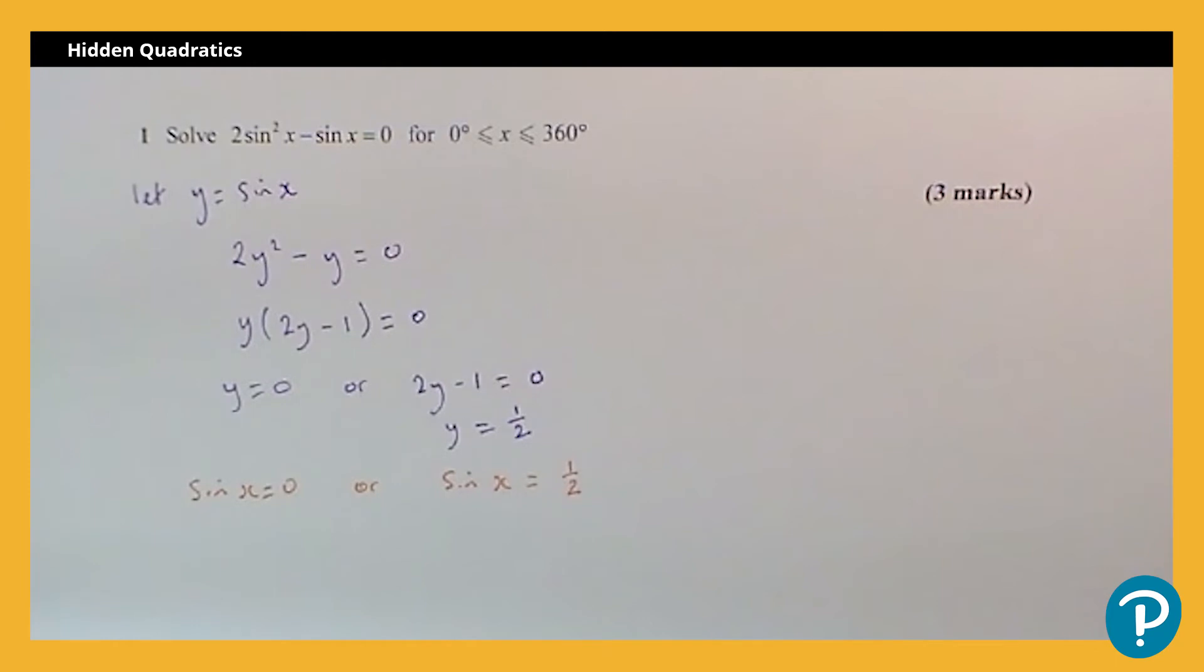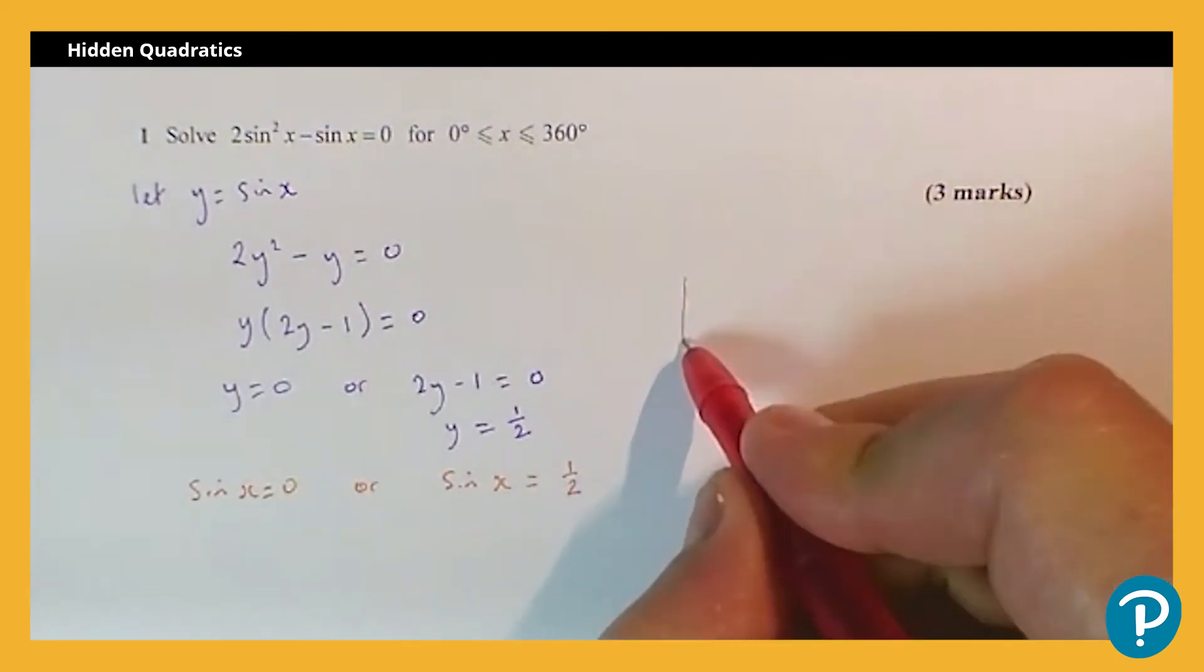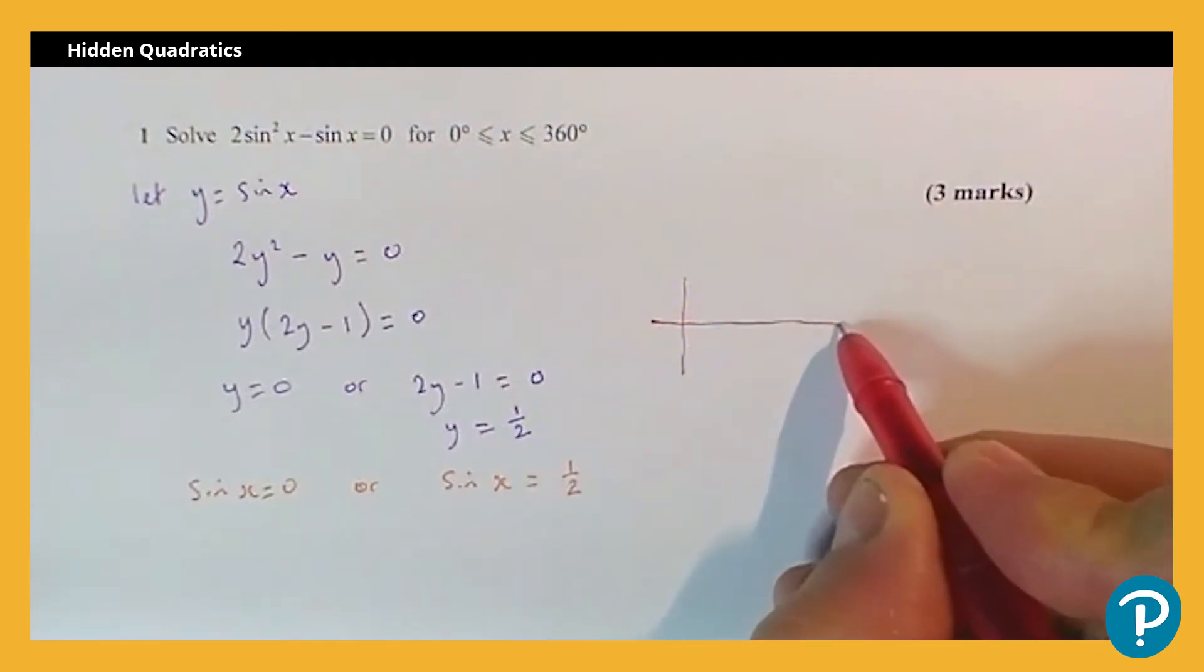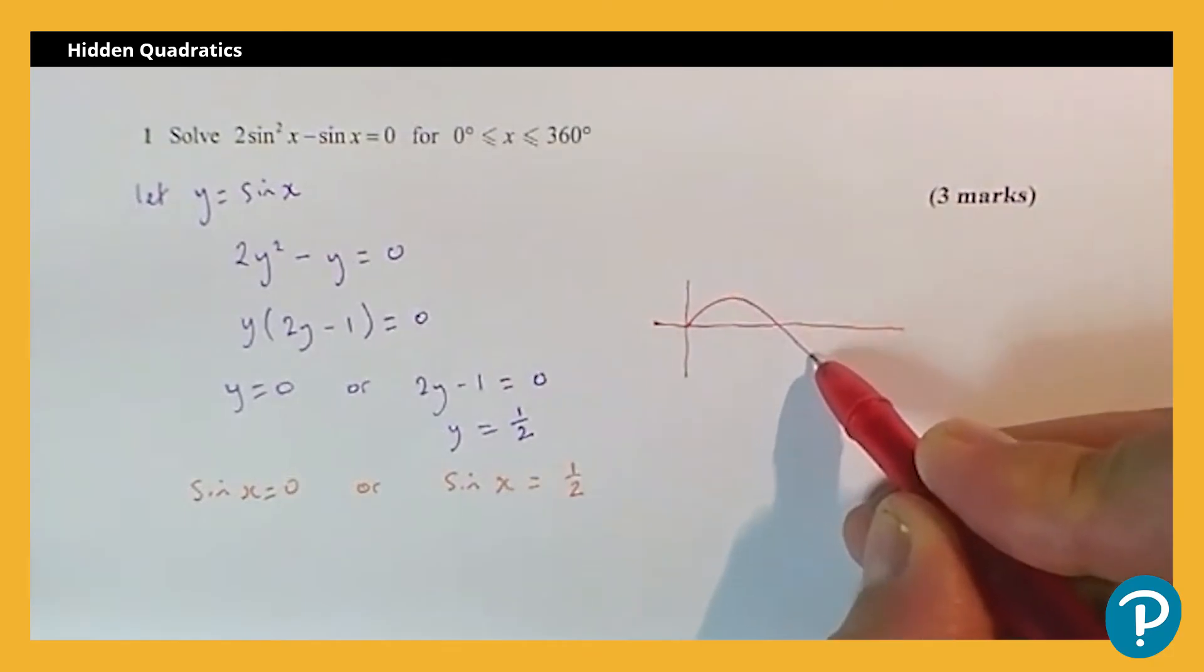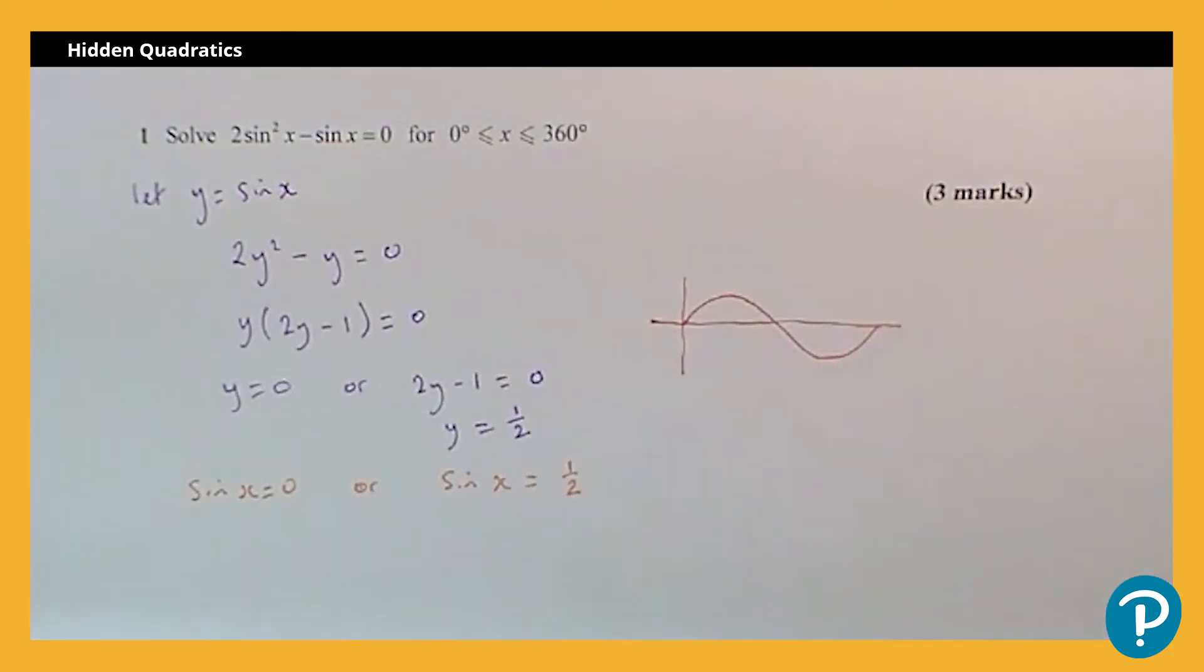And what I'm going to do is do a quick sketch of the sine curve in the range that I'm interested in. So starts at zero, down to 360.